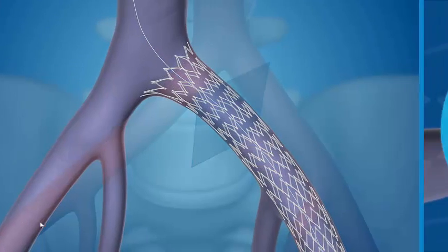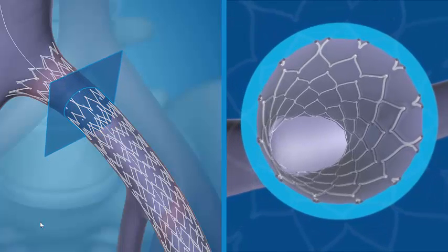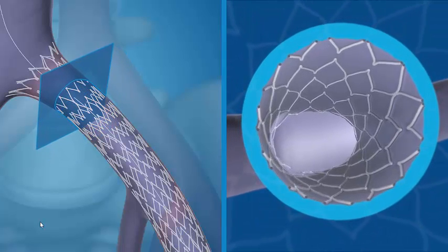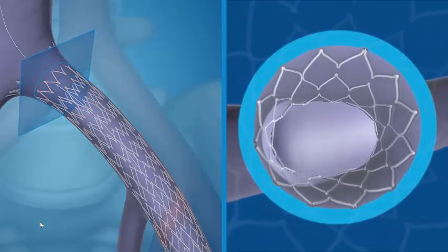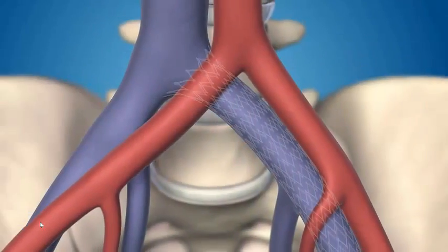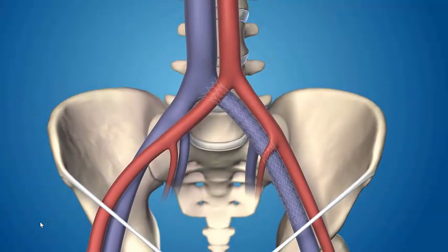Stent migration and thrombosis can be risks of insufficient vessel wall apposition when a stent's diameter is not adequate. The Abrae Stent is available in a full range of sizes, specifically tailored for the iliofemoral venous profile.